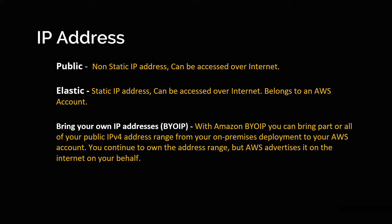An elastic IP address is the same as a public IP address, but its only difference is it is static in nature. When you assign a particular elastic IP address to your EC2 instance, no matter how many times you turn off and turn on the instance, the IP address of that particular EC2 instance will not change.